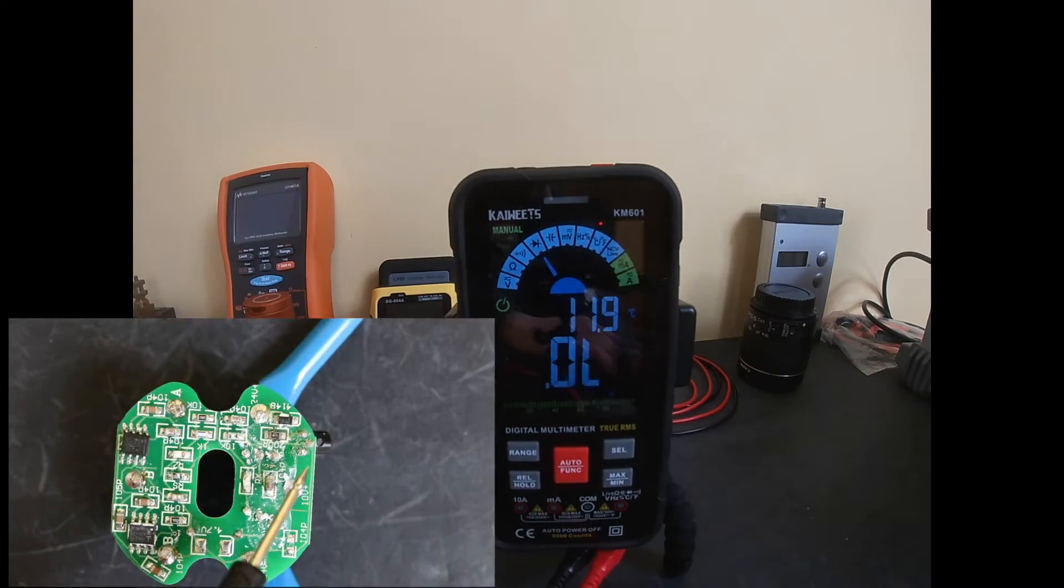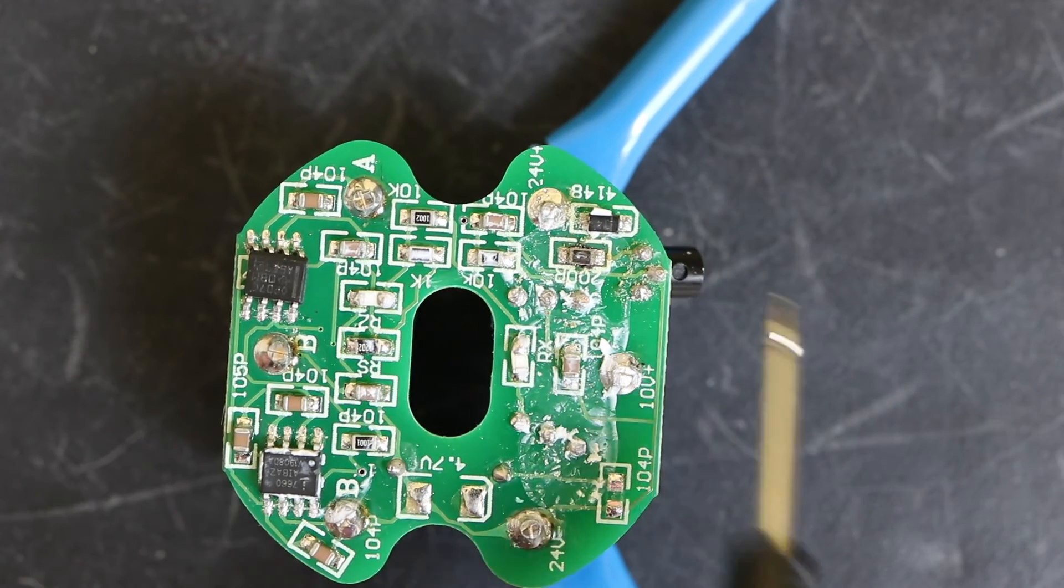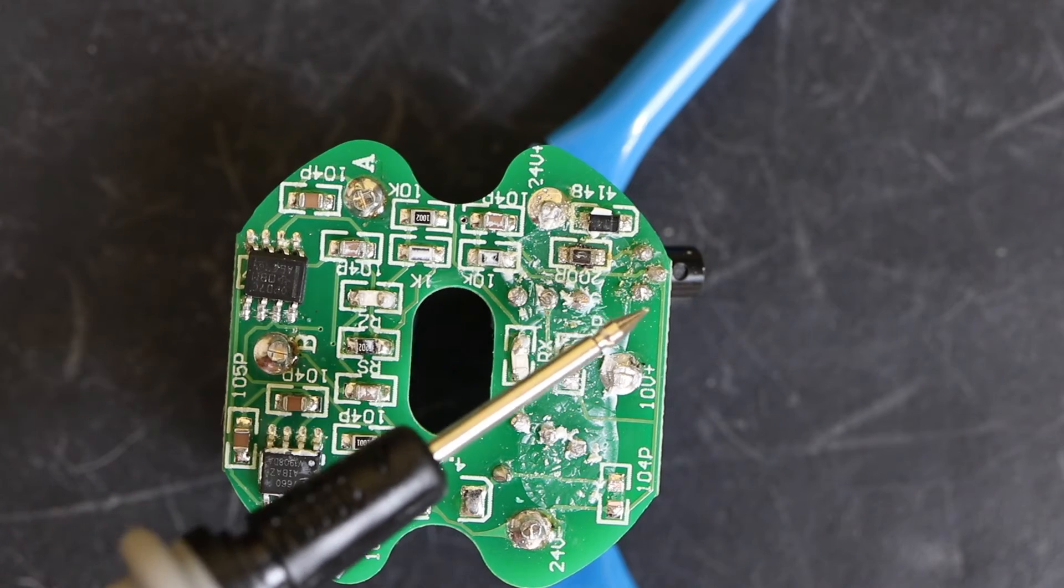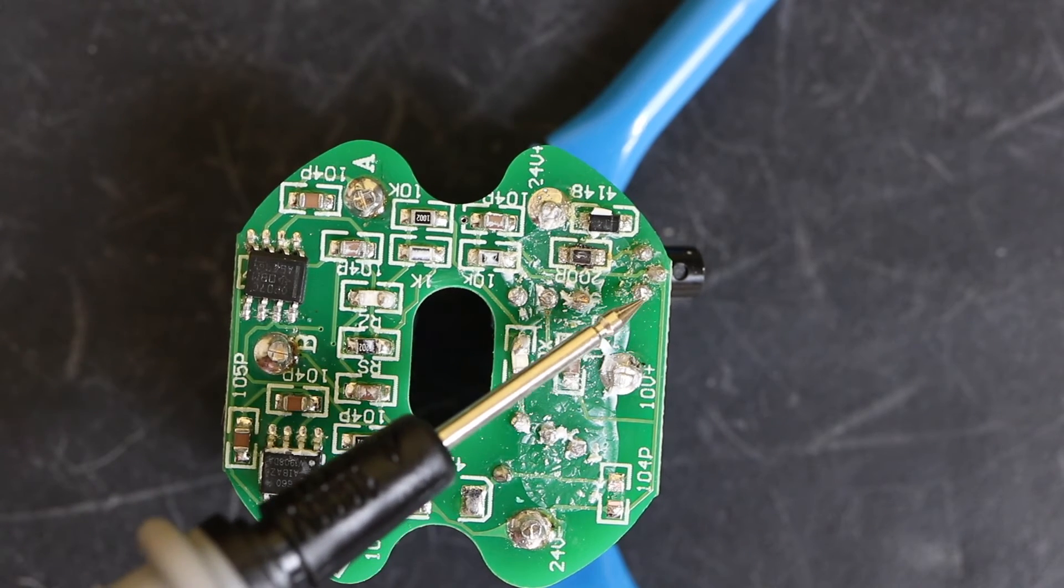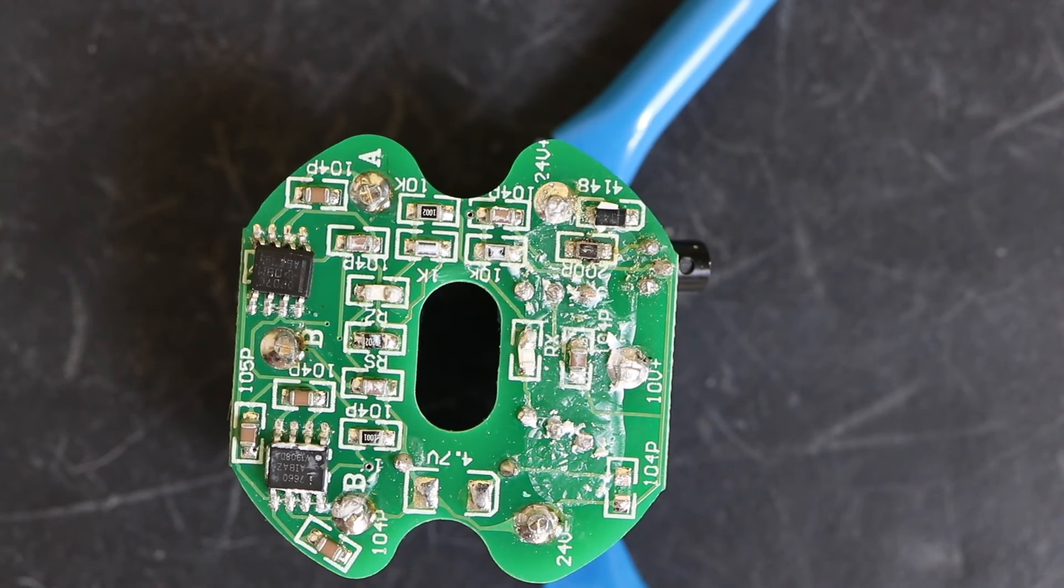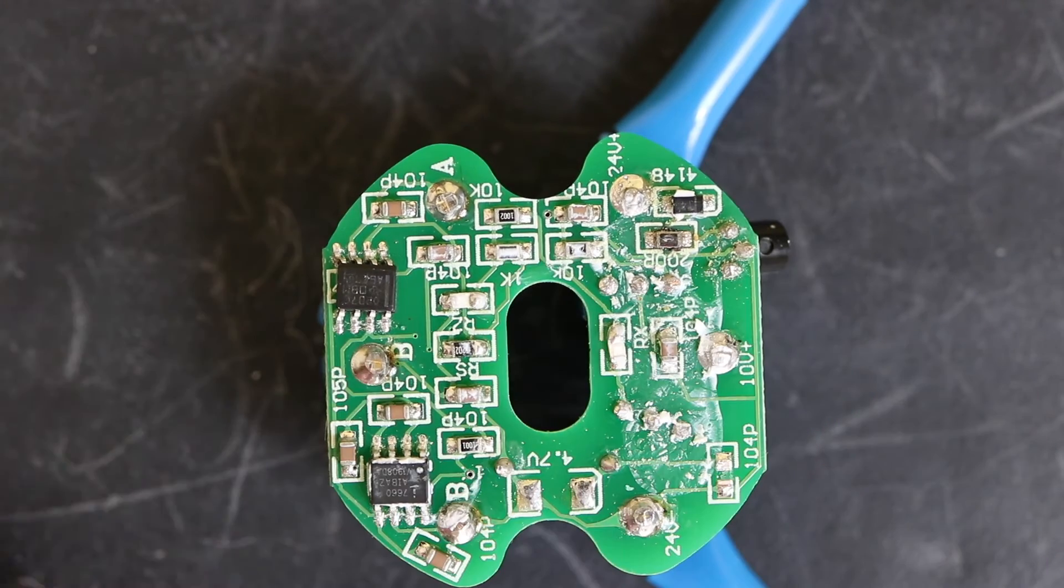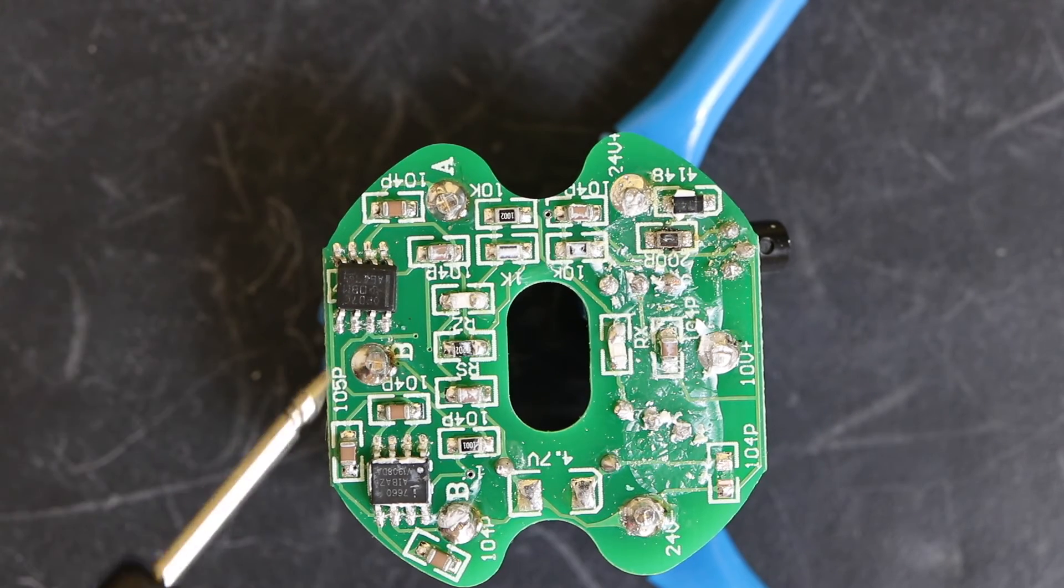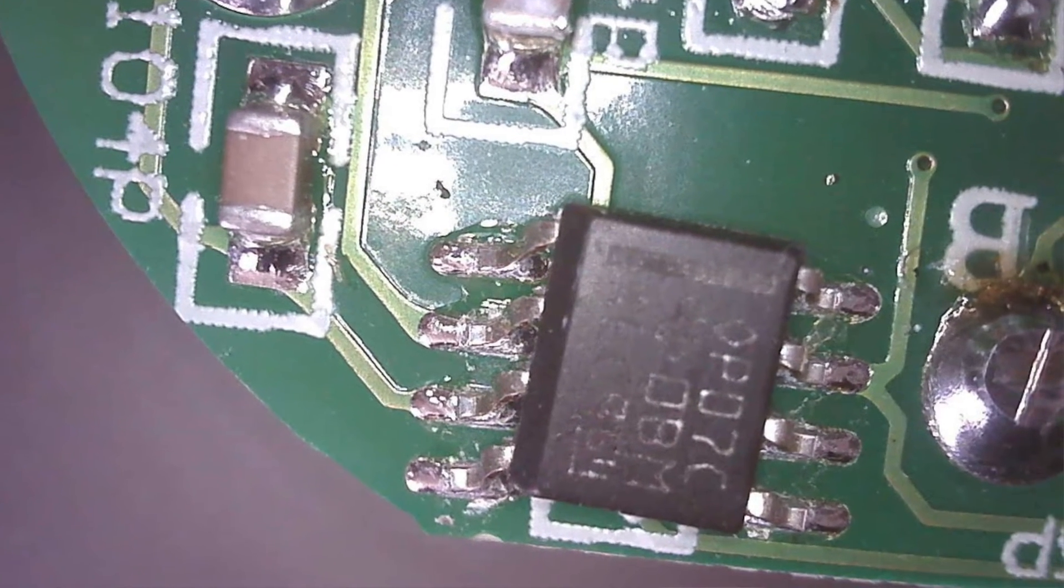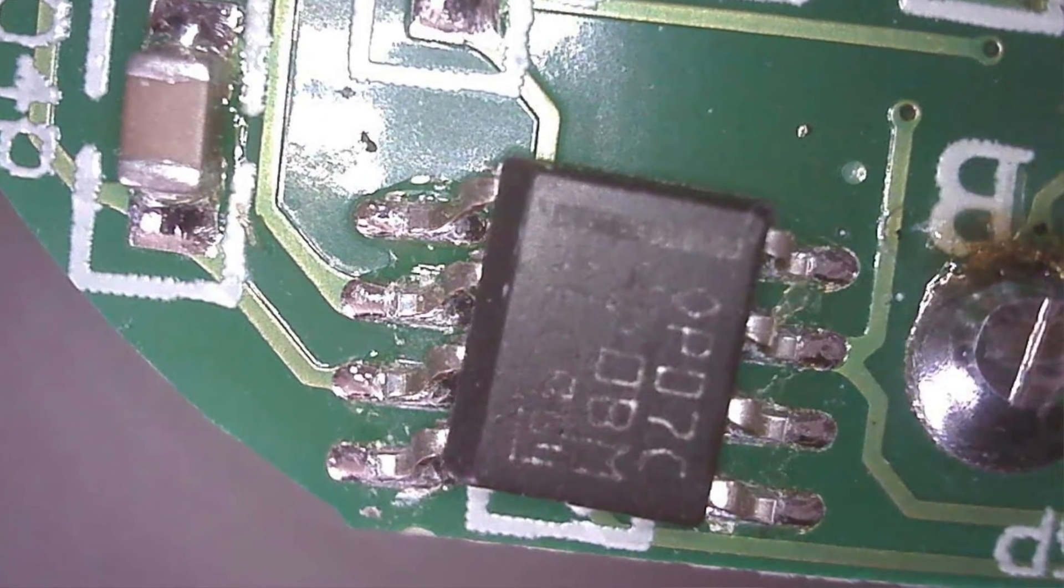So it looks like the failure is on this little linear voltage regulator there. I don't have a replacement for that regulator but what I will do is desolder it and short it out and then I can just put 15 volts direct into the board to see if we can get it back up and running. Just before I do that I'll show you...